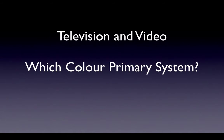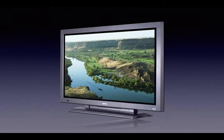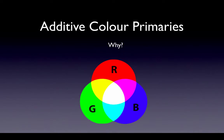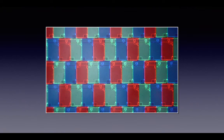Now knowing this, which system do you think television and video cameras use? TV uses the additive system. Why? Because a TV set is really a light source. The TV signal is made up of three additive primary colors: red, green, and blue — or RGB.